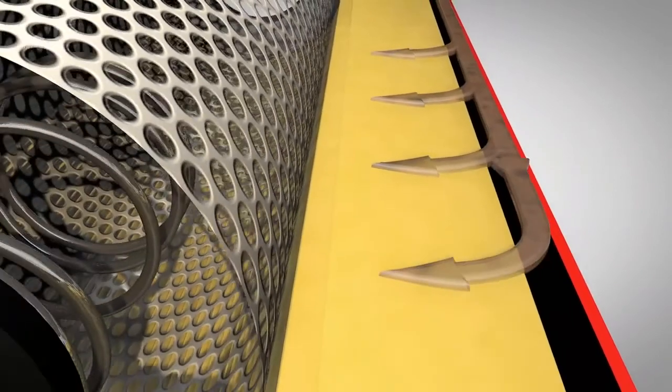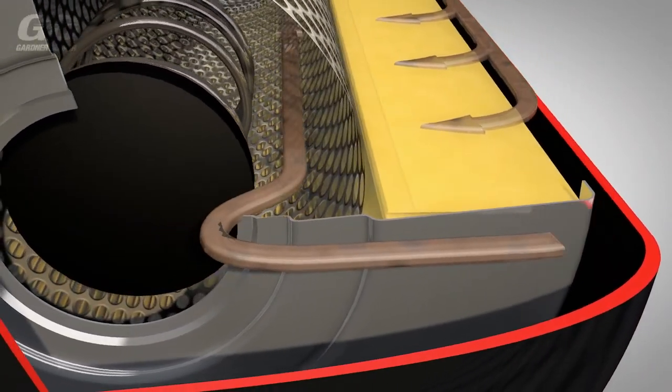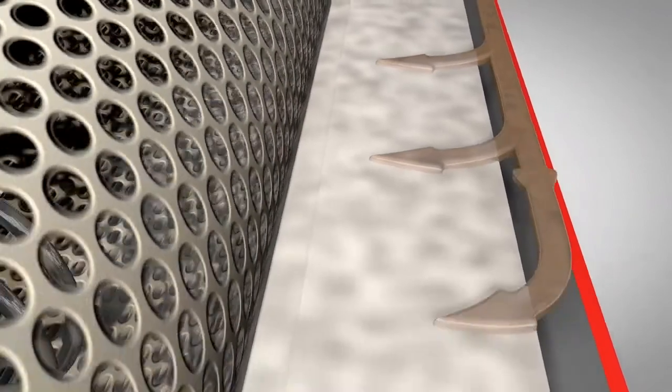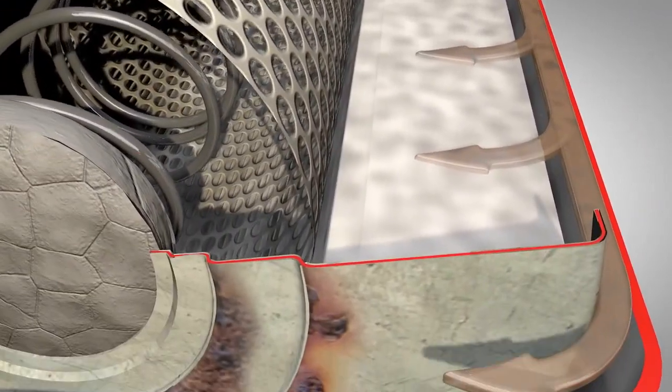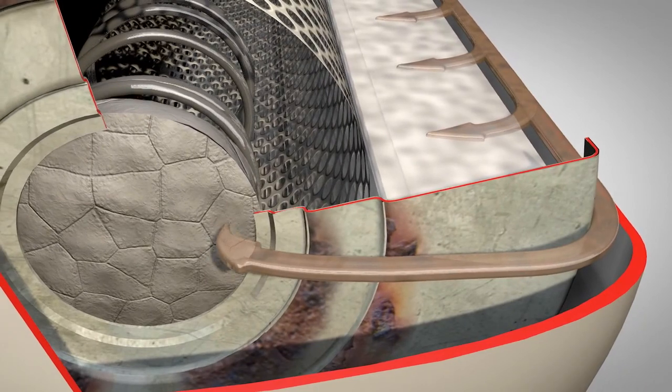The bypass valve has an important function. During a cold start, it ensures that the compressor is reliably lubricated at all times. If it opens too late, the supply of oil to the screw may be inadequate. In this case, the result is undue wear of the screw.